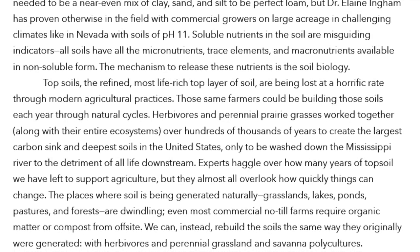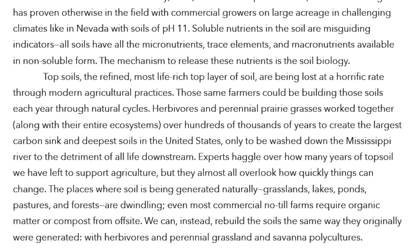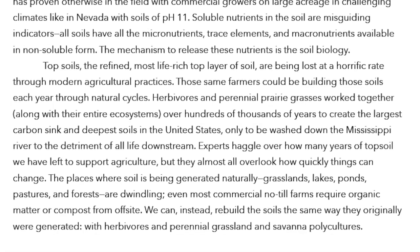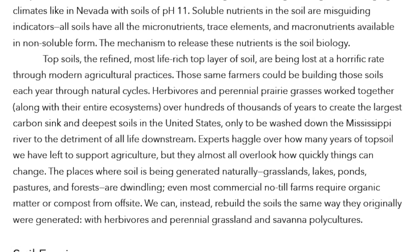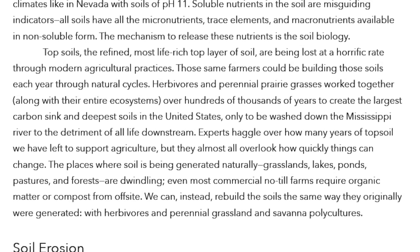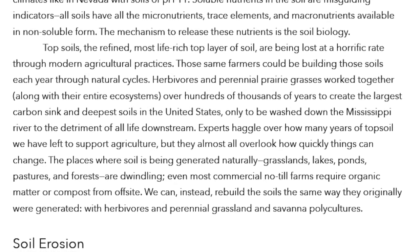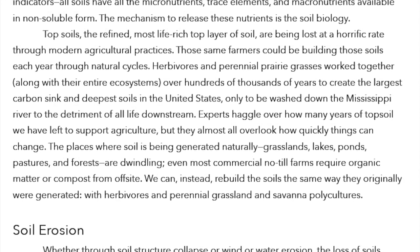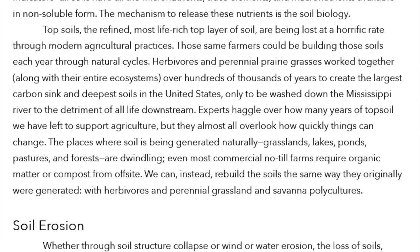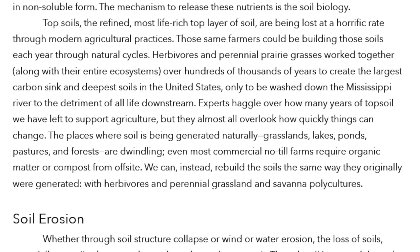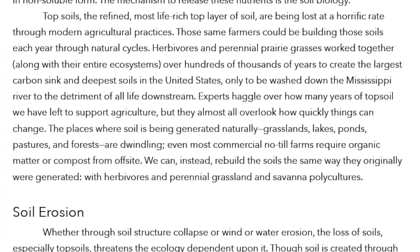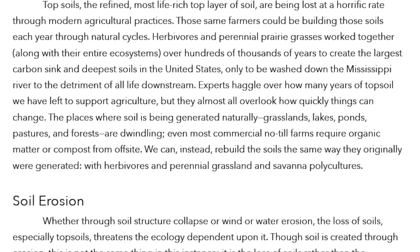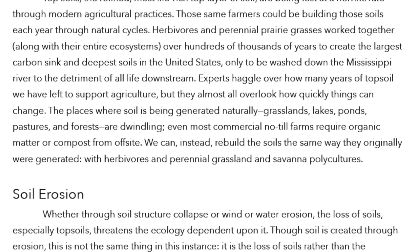The mechanism to release these nutrients is the soil biology. Topsoils — the refined, most life-rich top layer of soil — are being lost at a horrific rate through modern agricultural practices. Those same farmers could be building those soils each year through natural cycles. Herbivores and perennial prairie grasses work together, along with their entire ecosystems, over hundreds of thousands of years to create the largest carbon sink and deepest soils in the United States, only to be washed down the Mississippi River to the detriment of all life downstream.